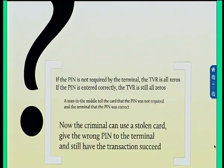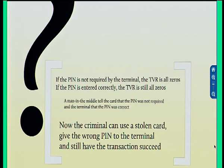One reasonable interpretation is: if the PIN is not required, make the TVR all zeros, because you don't need to set the bit. But on the other hand, if the PIN is entered correctly, the TVR is still zero — because it was required and it was satisfied. So these two cases — where the PIN is not required, and where the PIN is correct — look the same from the bank's perspective. That means a man-in-the-middle can change the result of the PIN verification and the bank won't be able to tell. And that's exactly what we did.